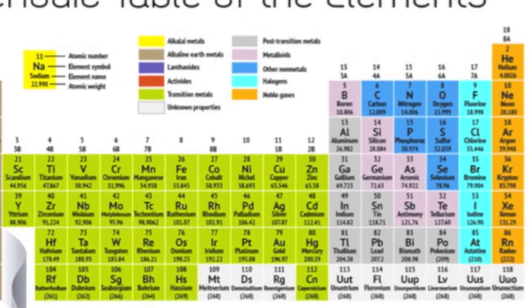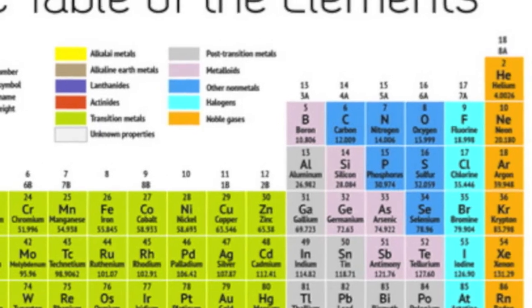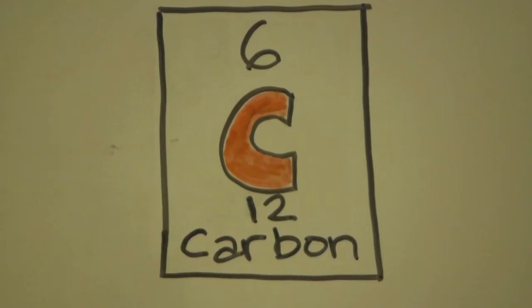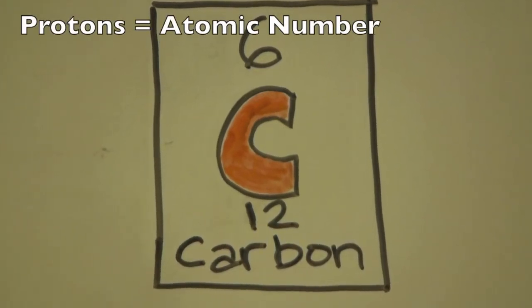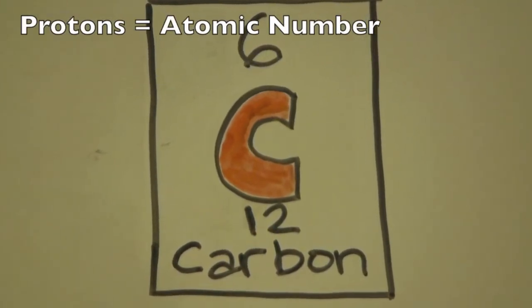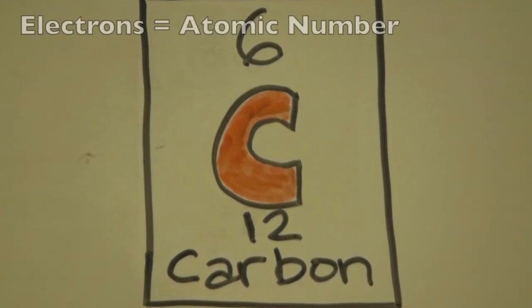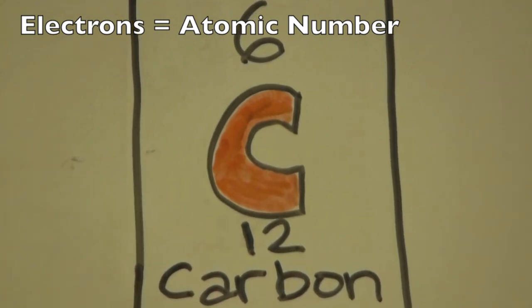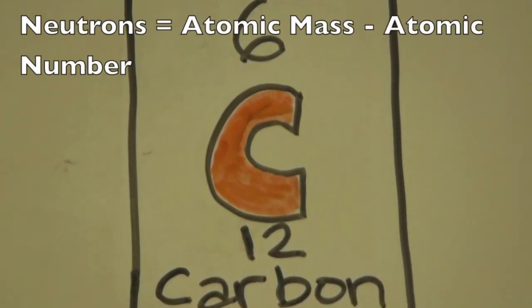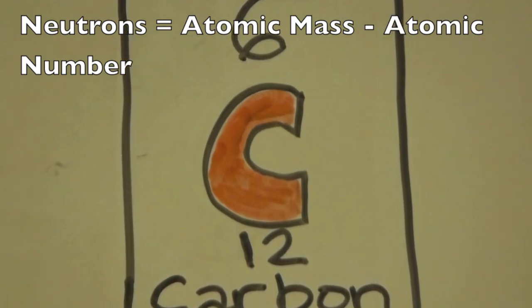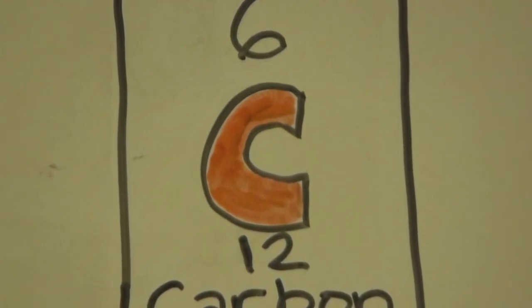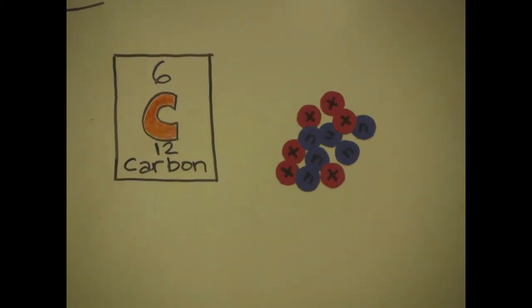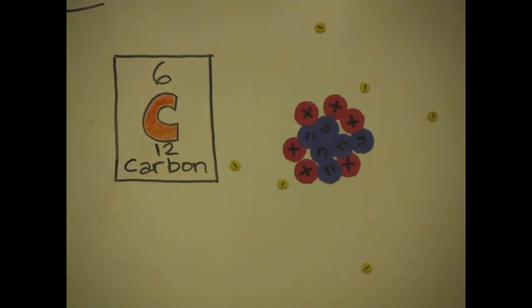Now we can use the periodic table to make a prediction about what another element's atoms look like. Let's try carbon. Predict how many protons, neutrons, and electrons make up the carbon atom. That's correct! There are six protons and six neutrons in the nucleus and six electrons zooming around the outside of the atom. Great job!